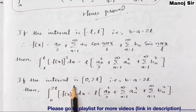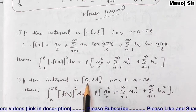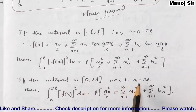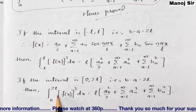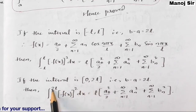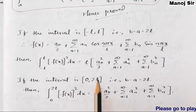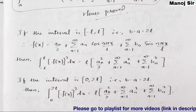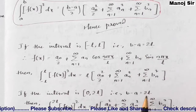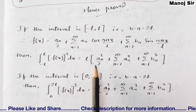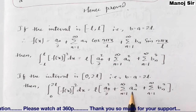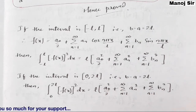For the interval (0, 2l), b−a = 2l, so the result is the same: integral from 0 to 2l of [f(x)]² dx = l × [a₀²/2 + summation from n=1 to infinity of aₙ² + summation from n=1 to infinity of bₙ²].